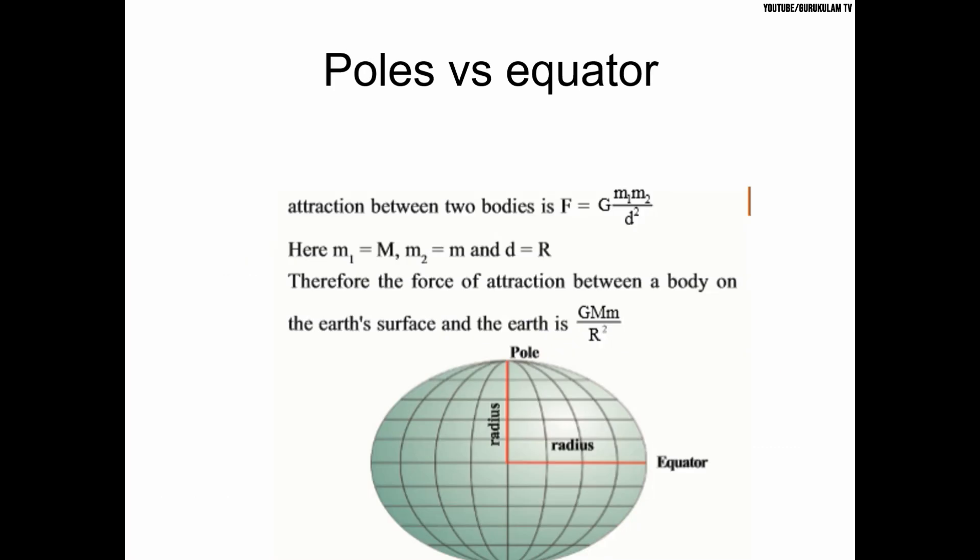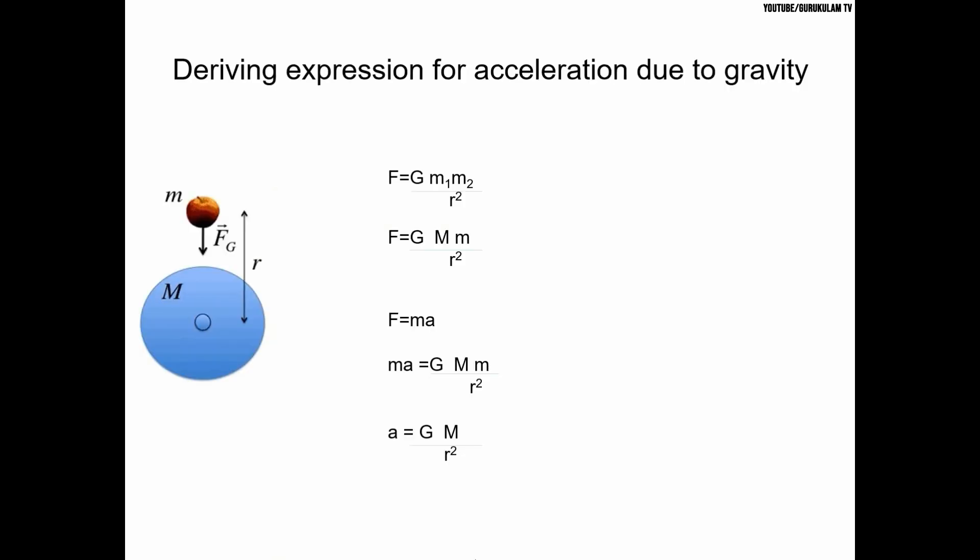Maximum gravitation is at the poles, and minimum gravitation is at the equator. This is how we get an expression for acceleration due to gravity.